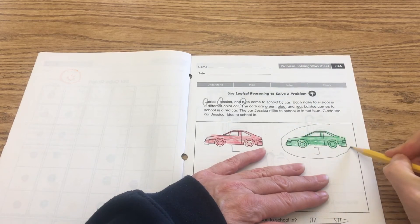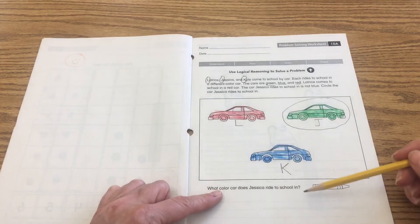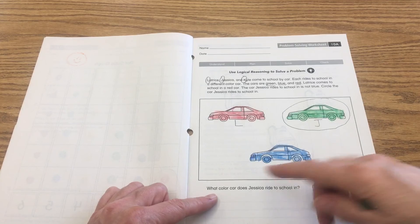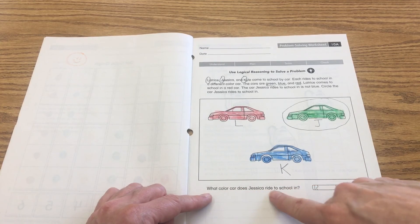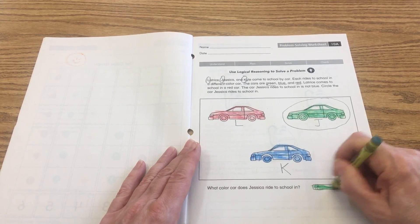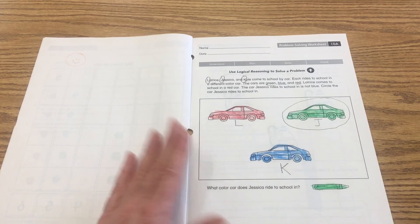And then it says, at the bottom here, there's a picture of a crayon and they want you to color that crayon because it says what color car does Jessica ride to school in. And we know because we've circled it that she rides to school in the green car.